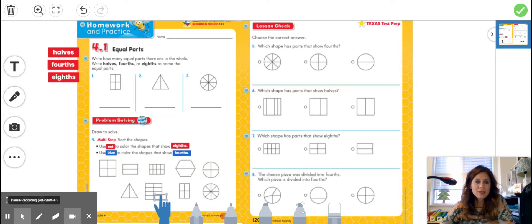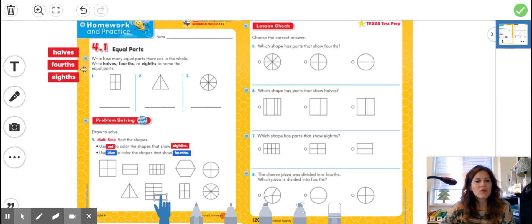So on your homework in Seesaw today, I want to go over your worksheet with you before you get started. On the first set, it says write how many equal parts there are in the whole. You're either going to choose halves, fourths, or eighths to name the equal parts. And I have already made you text boxes over here so that you can click and drag to say halves, fourths, or eighths for each of these shapes.